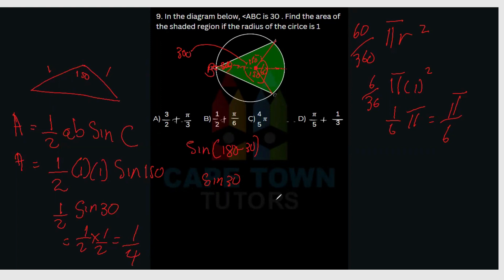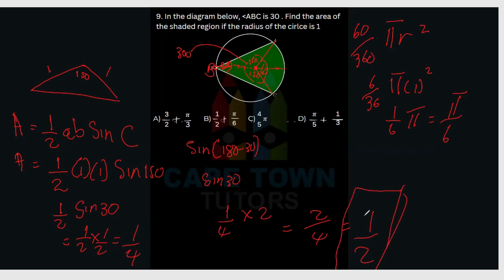That 1/4 is for one triangle, but we have two triangles, so multiply by 2: 2/4 = 1/2. The total shaded area is the two triangles plus the sector: 1/2 + π/6. That is answer B. Hopefully that makes sense — reach out in the comments if you have any questions.